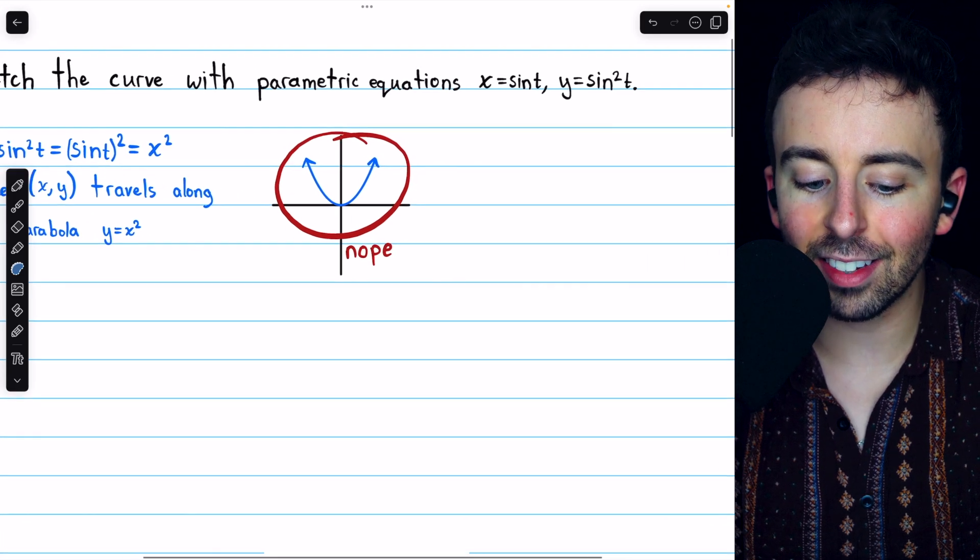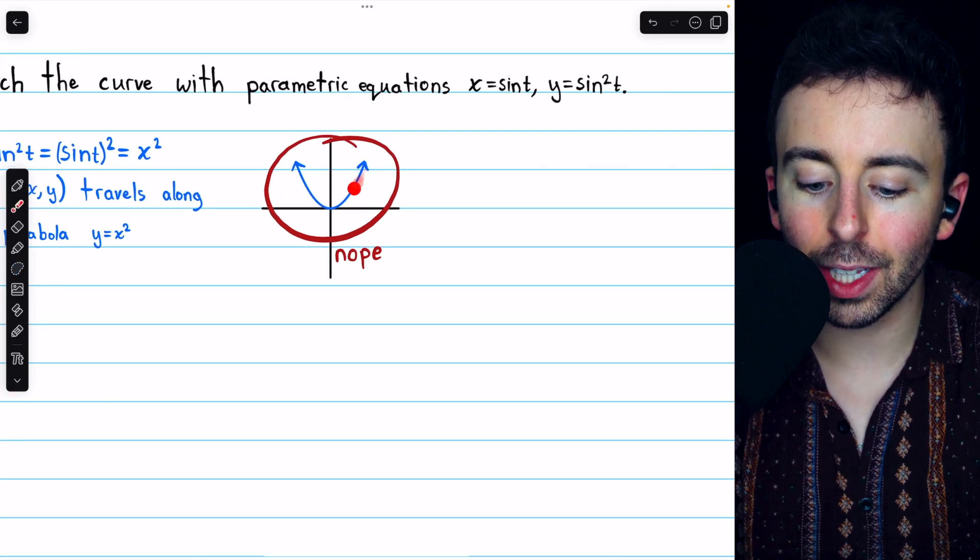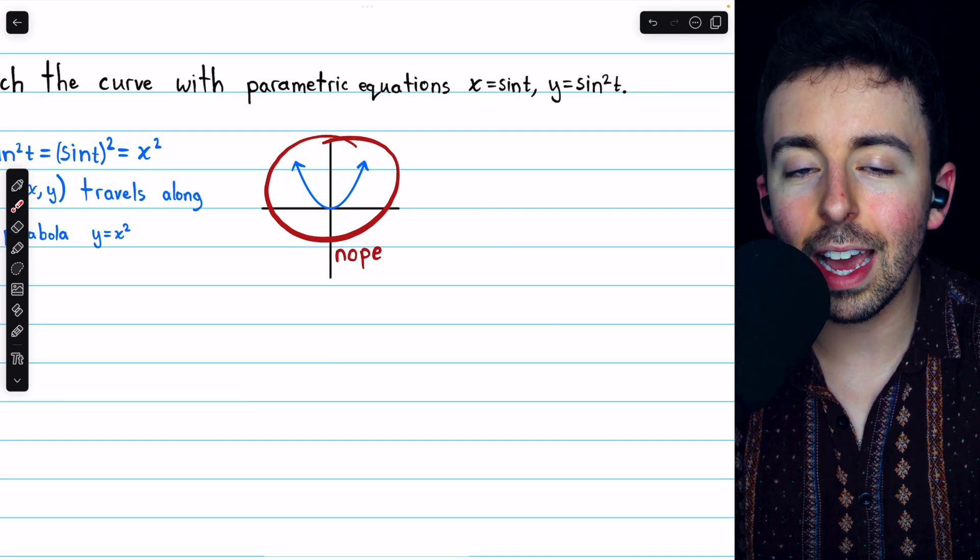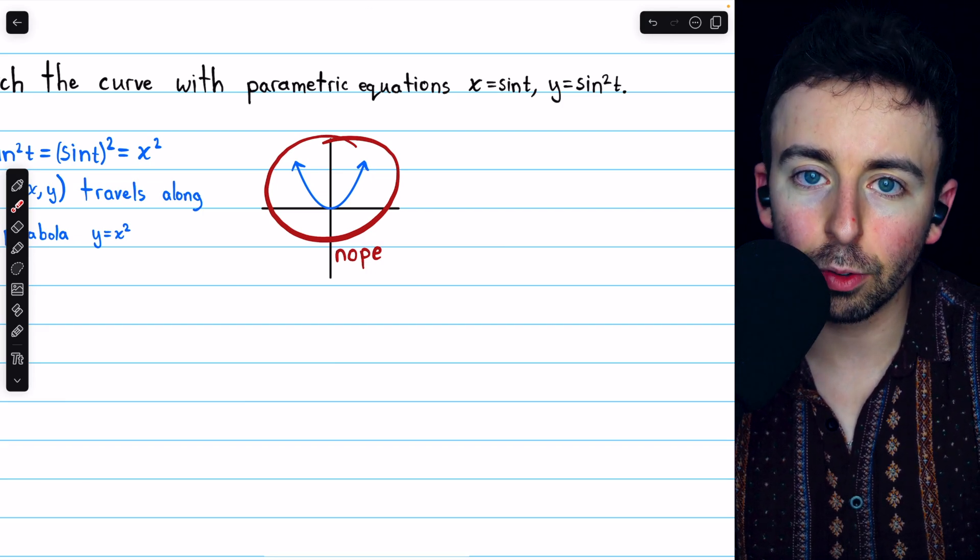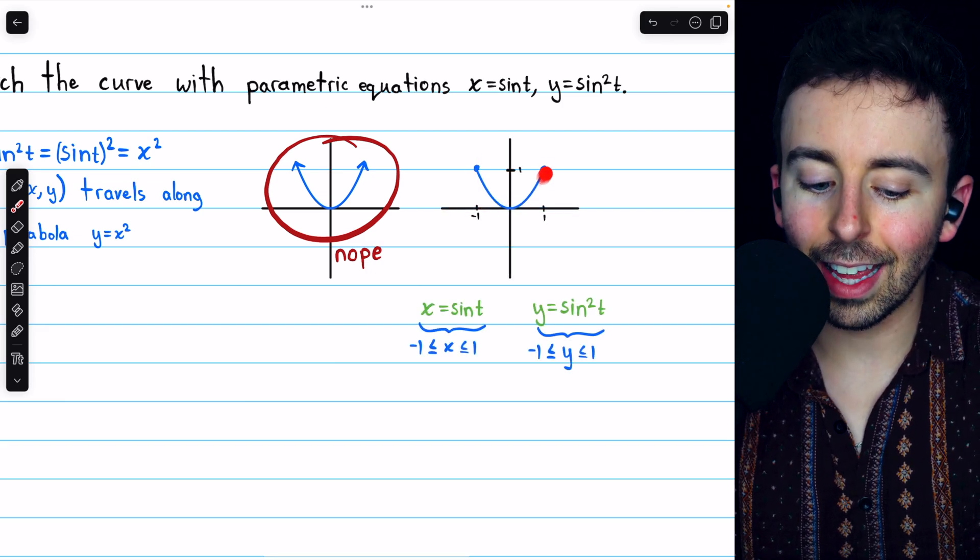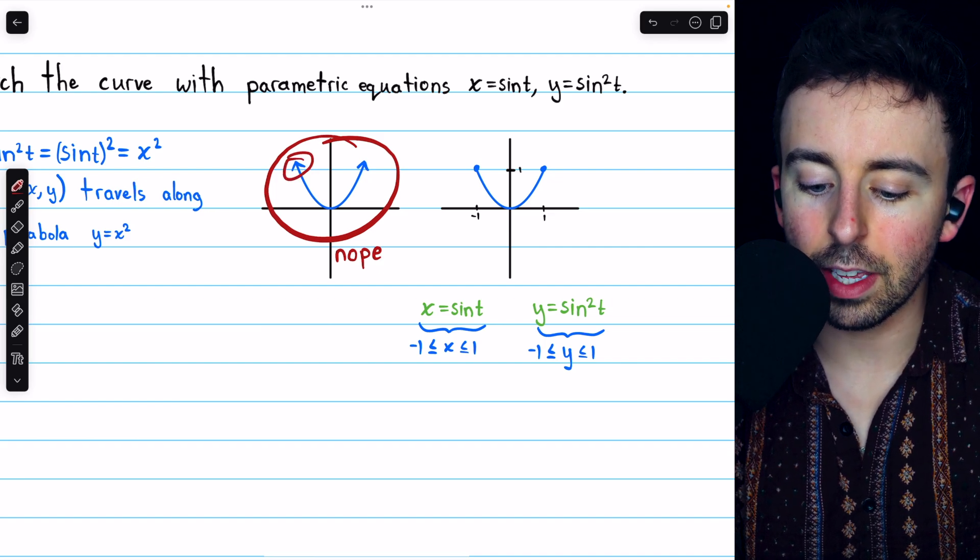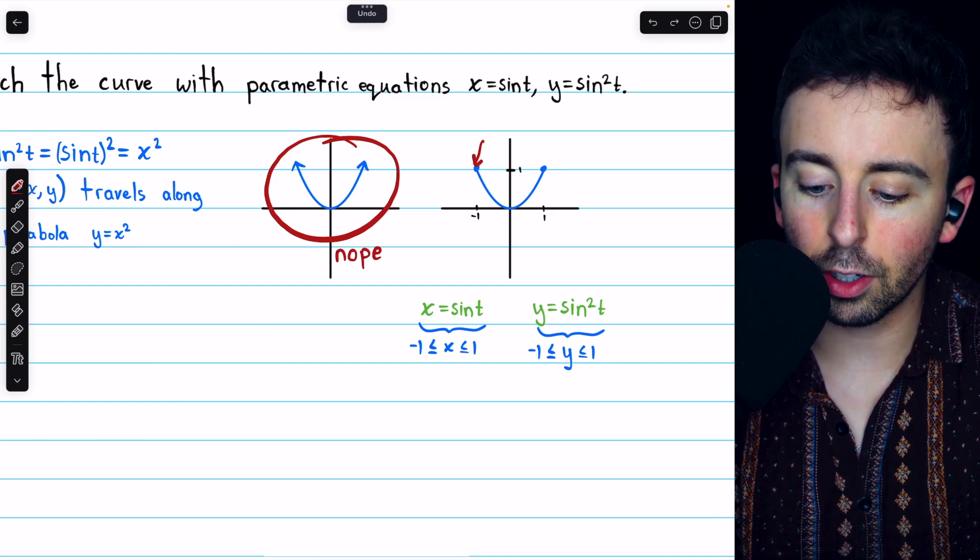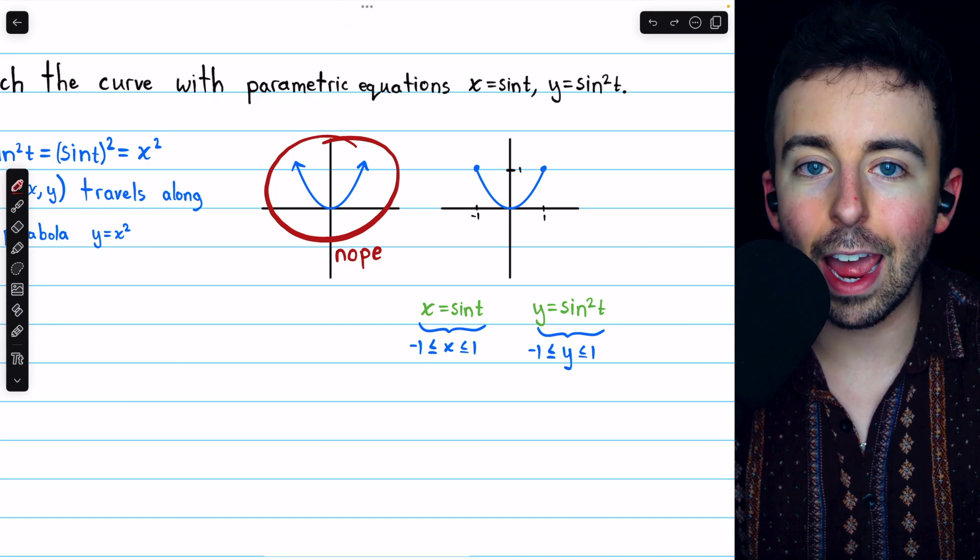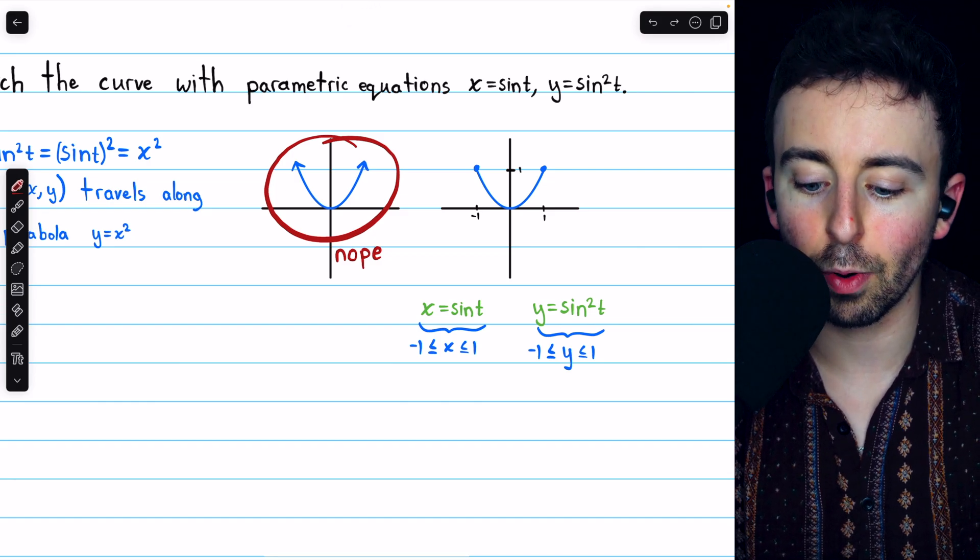Hence, the correct sketch would have this parabola, but only between x equals negative 1 and x equals positive 1. And that looks like this. You can see, instead of the arrowheads, we have just closed circles, indicating that those are the endpoints, so to speak, of this parabola.